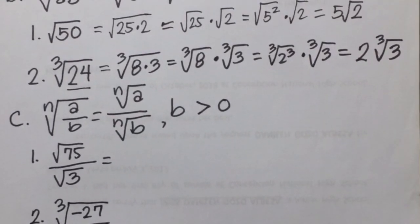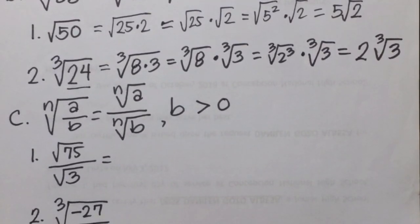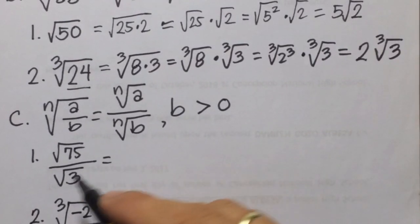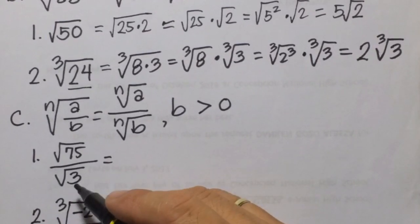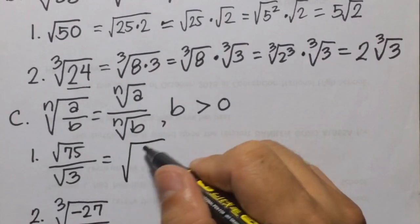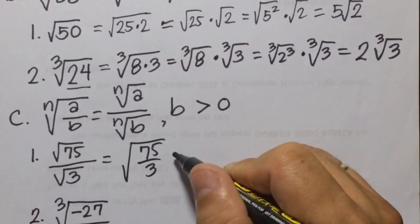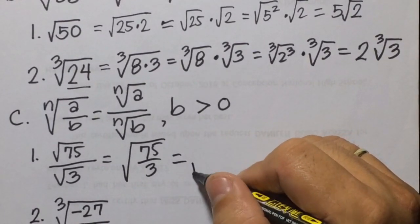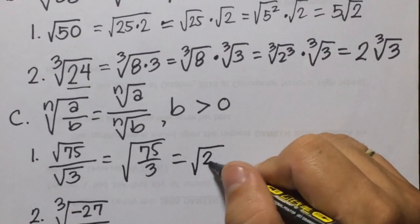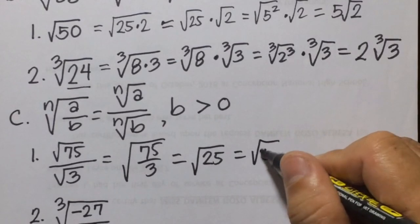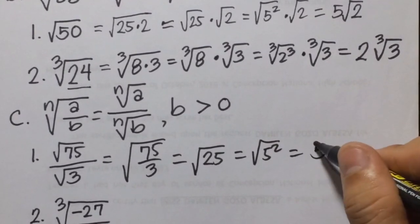The next law: the nth root of a divided by b equals the nth root of a divided by the nth root of b, where b is greater than 0. Example: square root of 75 divided by square root of 3. Applying this law, that equals square root of 75 divided by 3, and 75 divided by 3 is 25. So we have square root of 25, which is square root of 5 squared, equal to 5.